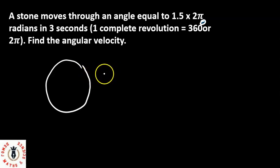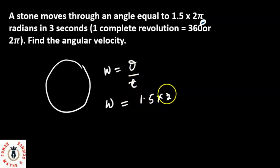Our angular velocity obviously is equal to θ, that's the angular displacement over time. So ω, which is the angular velocity, is the same thing as our angular displacement, which will be 1.5 times 2π radians over 3 seconds.